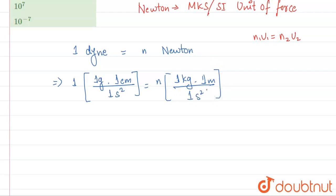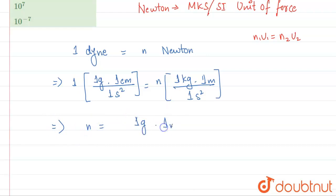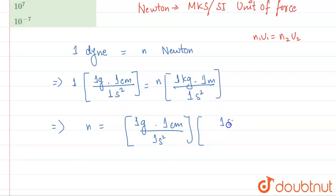Now we solve for N. Rearranging: N equals one gram times one centimeter divided by one second squared, multiplied by the reciprocal — one second squared comes up, one kilogram and one meter stay in the denominator.